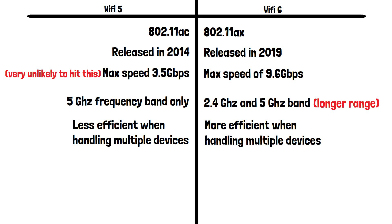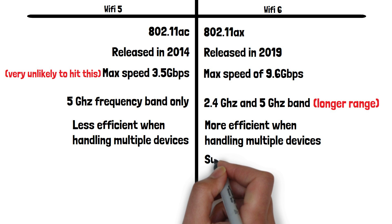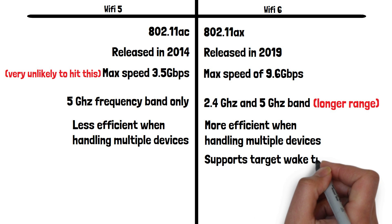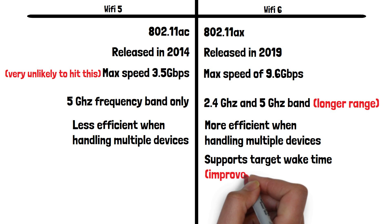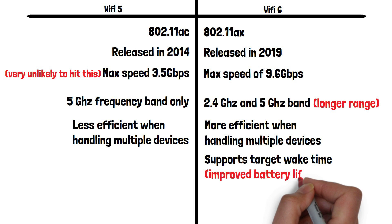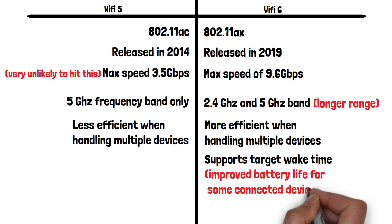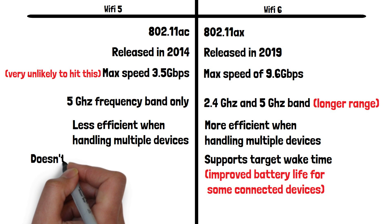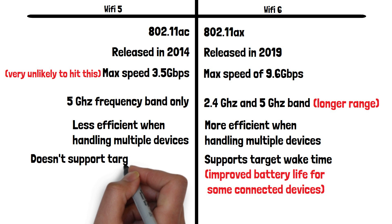Another and perhaps unexpected feature Wi-Fi 6 devices have over Wi-Fi 5 is that they may see improved battery life. This is due to a feature of Wi-Fi 6 known as target wake time. Smart home sensors will benefit the most from this as they can schedule their wake times more efficiently. Instead of staying awake for extended periods waiting for communication opportunities, they can synchronize their wake times with the access point or router. This is not possible on Wi-Fi 5.